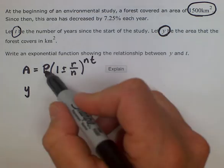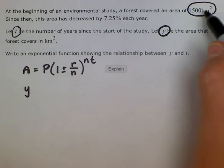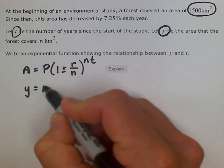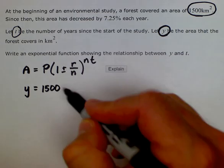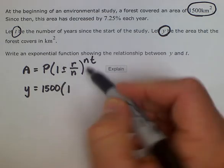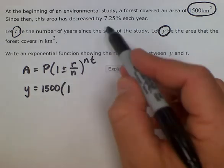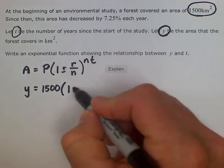And our initial amount is going to be our 1500. So our 1500 kilometers squared is going to be our initial amount. And then we would multiply that by 1. We would use the negative sign because it's decreasing every year. So we're going to subtract out the amount that is decreasing.